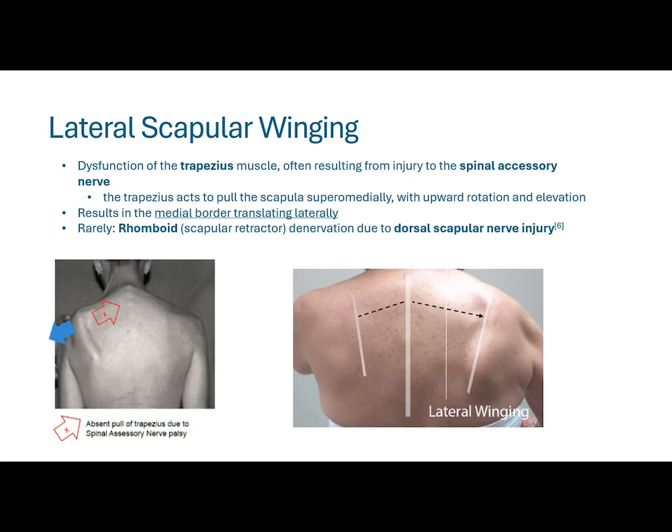When thinking about lateral scapular winging, most commonly we're thinking trapezius muscle dysfunction, which is often a result of injury to the spinal accessory nerve. The trapezius acts to elevate the scapula, with a bit of medial pull as well, especially in the middle traps, and provides some upward rotation. With dysfunction of the spinal accessory nerve and trapezius, the scapula tends to fall off laterally, as seen clearly in both pictures here. You may see somewhat less scapular protrusion than with serratus anterior dysfunction.